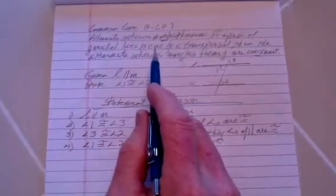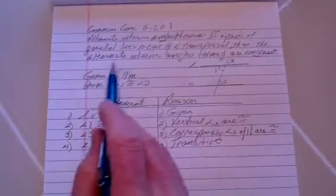We have now proven that a pair of parallel lines is cut by a transversal, then the alternate interior angles formed are congruent.